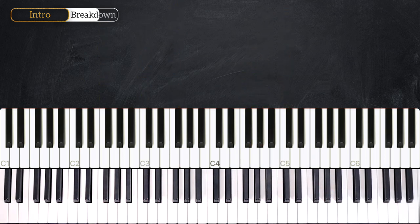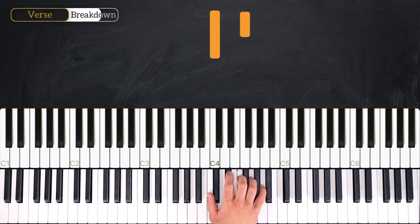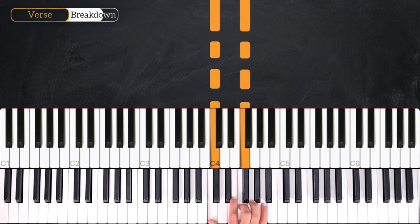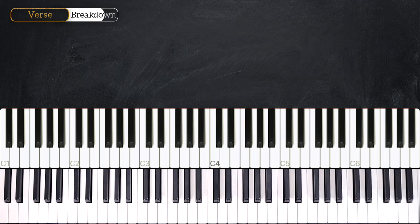Very good. Okay, now let's learn the verse. The right hand here is really easy. We'll play on every offbeat: C and F together, one, two, three and four and one and two and three and four.